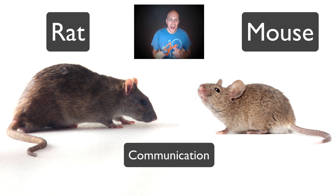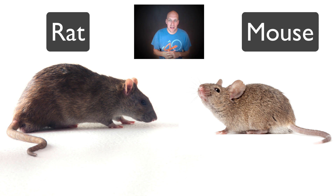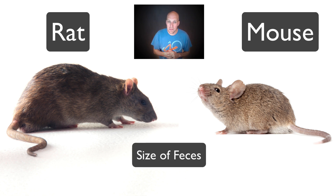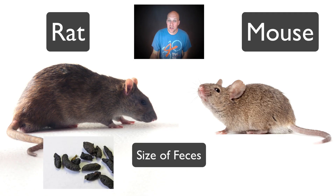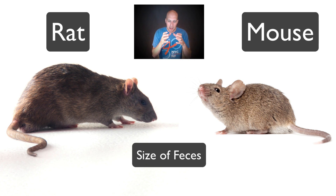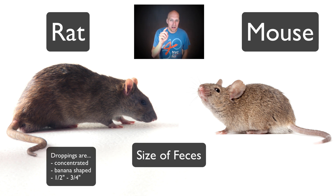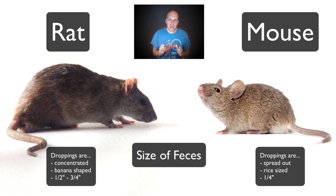Rats and mice can communicate not only with squeaks, but they can also make a high-frequency sound that cannot be heard by human ears, and they'll even tap their tails to send messages. As far as the main difference between the two rodents, it comes down to size. Mice have small grain-shaped droppings about one-quarter inch and spread out about 75 to 80 a day. Rats have larger banana-shaped droppings around half an inch to three-quarters of an inch and drop around 40 to 50 a day, always in the same area. Concentrated, banana-shaped droppings suggest a rat; rice-sized scattered droppings suggest a mouse.